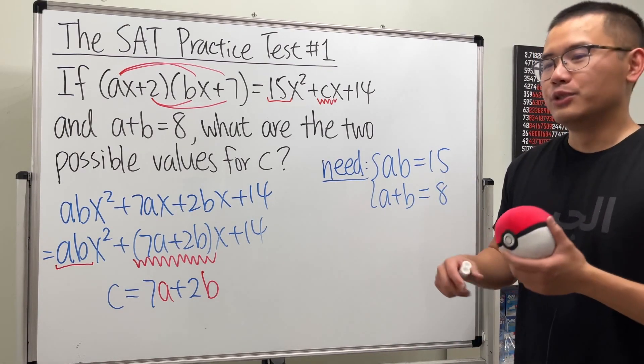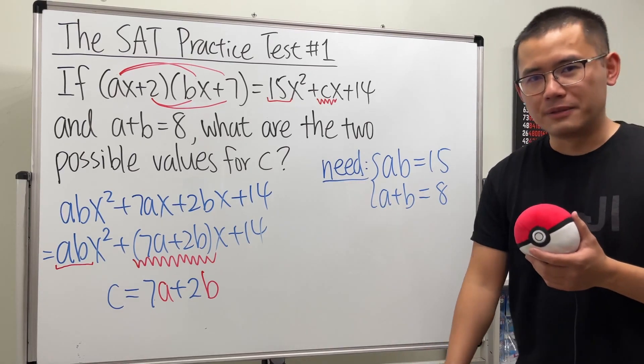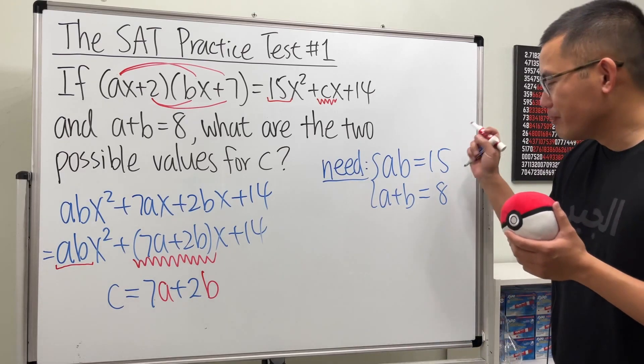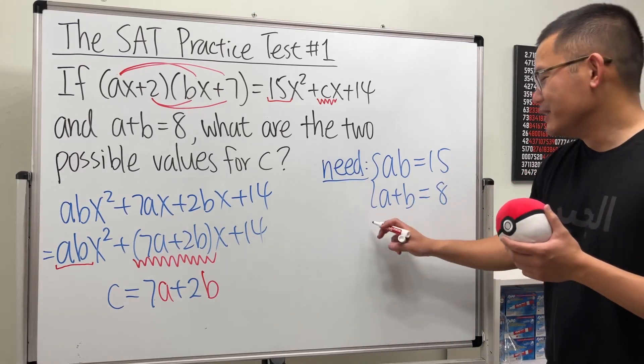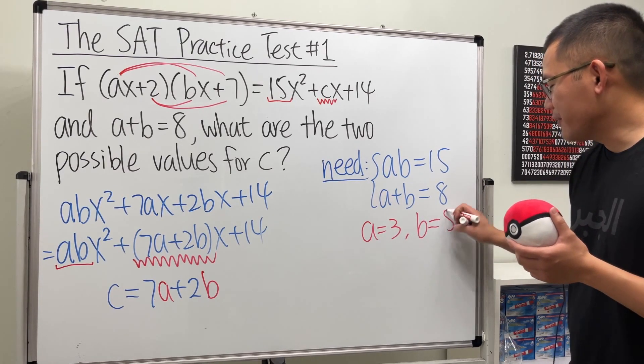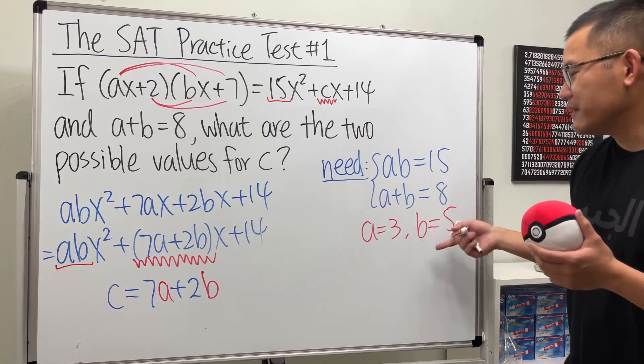Two numbers that multiply to 15 and together add up to be 8. Well, just kind of try it. You should see that a is equal to 3, b is equal to 5. 3 times 5 is 15 and 3 plus 5 is equal to 8.